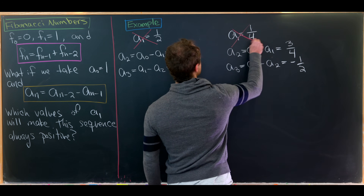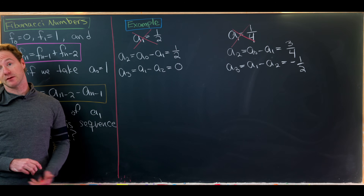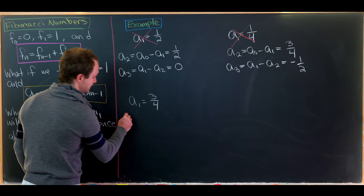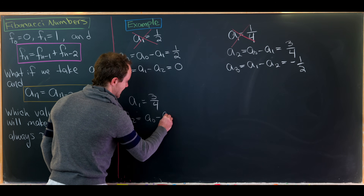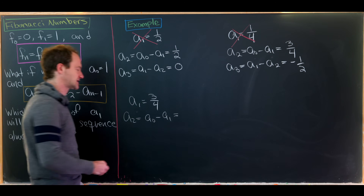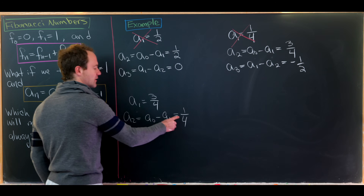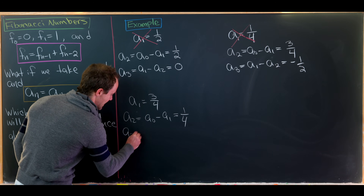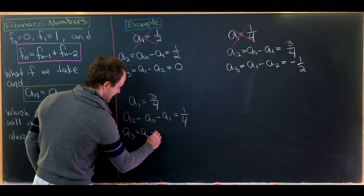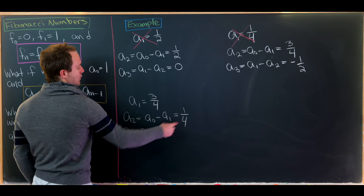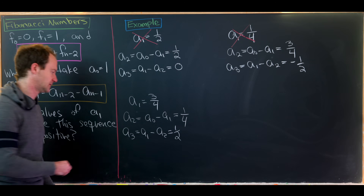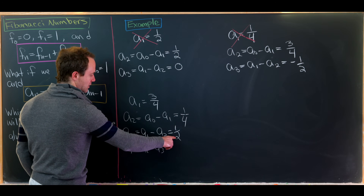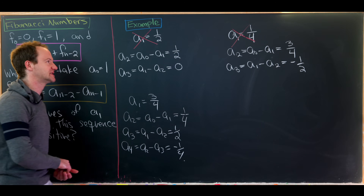Maybe the problem is not that 1/2 was too big but that it was too small. Let's look at a_1 = 3/4. We get a_2 = 1 - 3/4 = 1/4. Then a_3 = a_1 - a_2 = 3/4 - 1/4 = 1/2 — still positive. But a_4 = a_2 - a_3 = 1/4 - 1/2 = -1/4. So this doesn't work either.